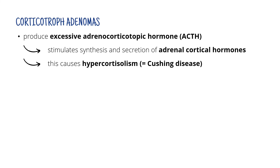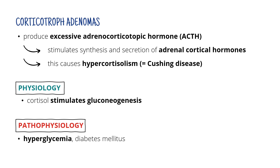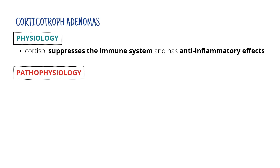What does cortisol do? First, cortisol stimulates gluconeogenesis — in other words, the synthesis of glucose. Too much cortisol means a lot of synthesized glucose, leading to hyperglycemia or even diabetes. Cortisol also suppresses the immune system and has several anti-inflammatory effects. That can be a good thing, but patients suffering from hypercortisolism will have a very difficult time with wound healing.